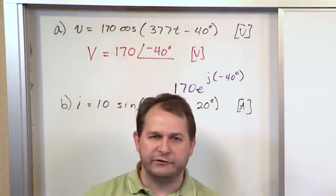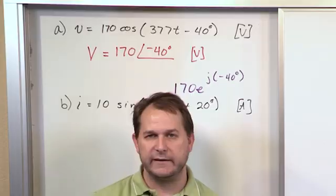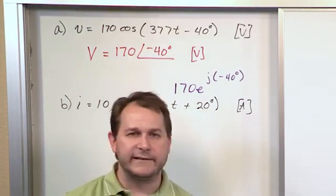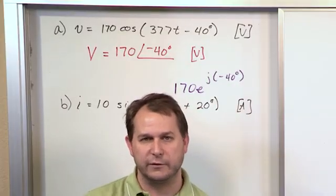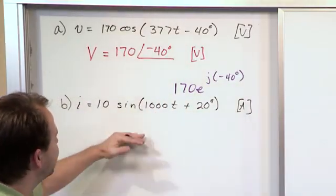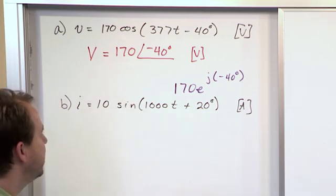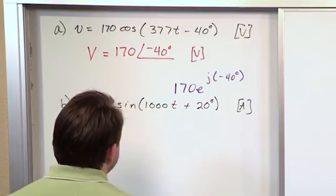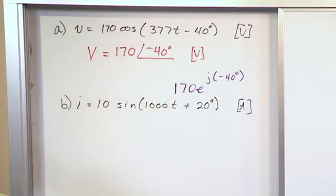Everything we've done so far has been in terms of cosine, and that's just convention. We write these signals as cosines. A sine is clearly not the same as a cosine. It's a shifted version with respect to the cosine. So in order to write your phasor, you've got to convert it to a cosine. You have to convert it to a cosine. We've already said that sine and cosine are the same thing. They're just out of phase with one another.